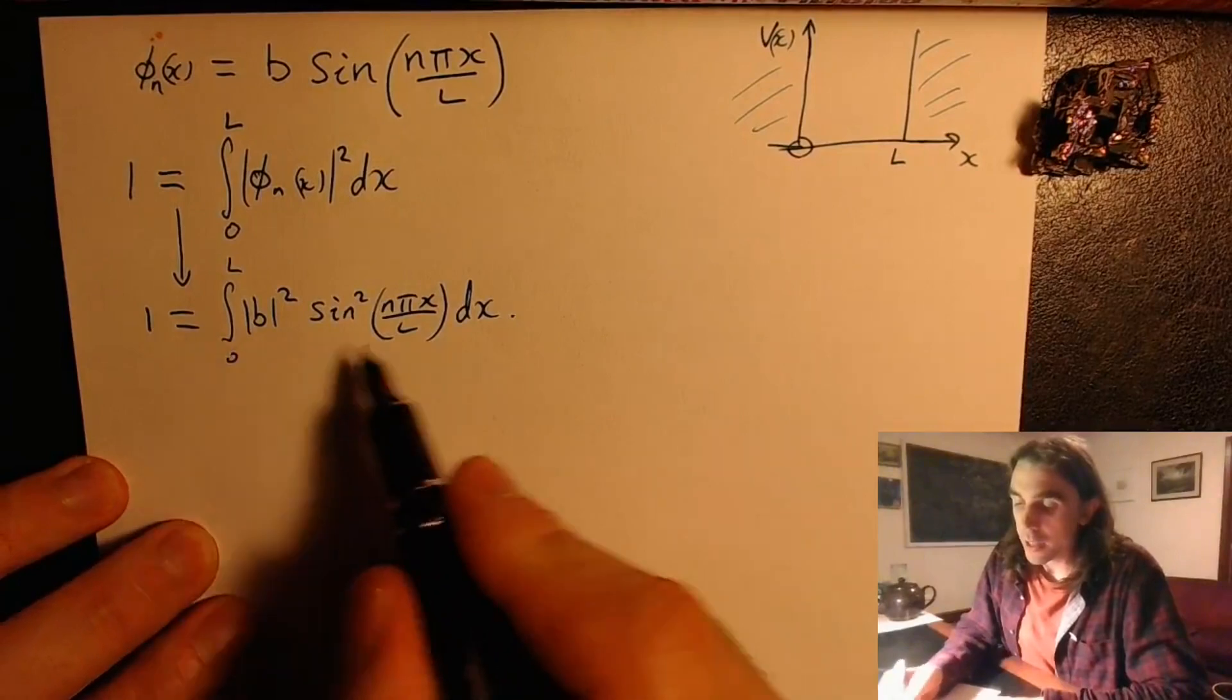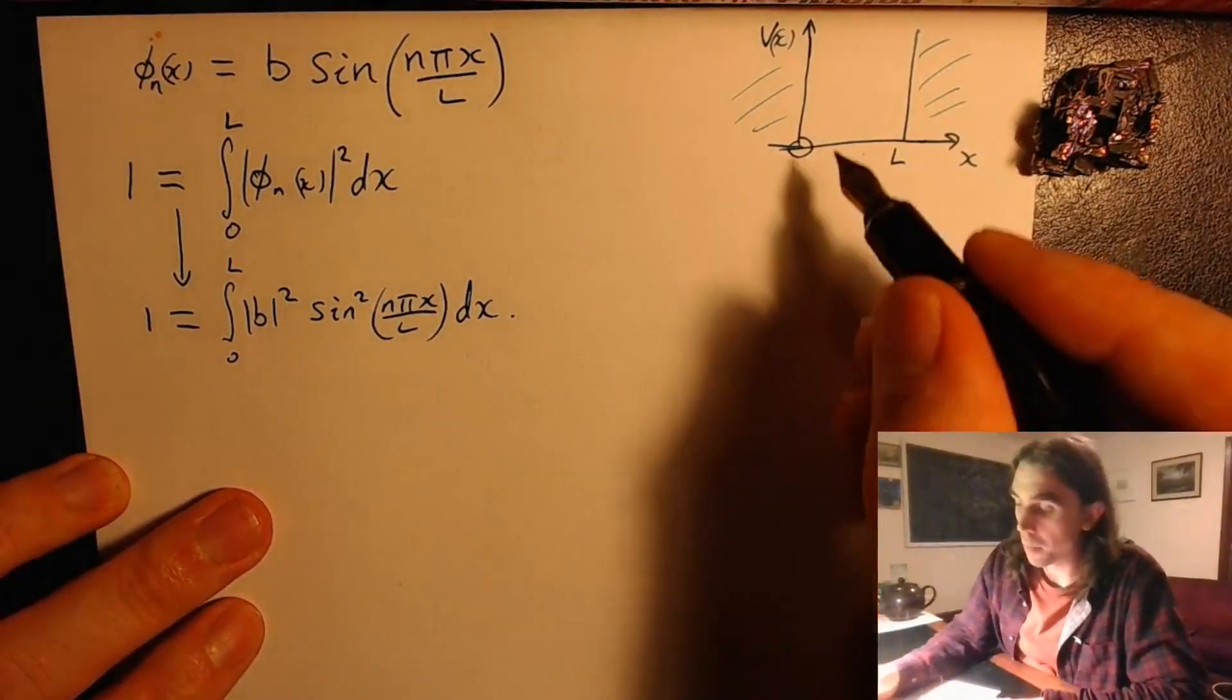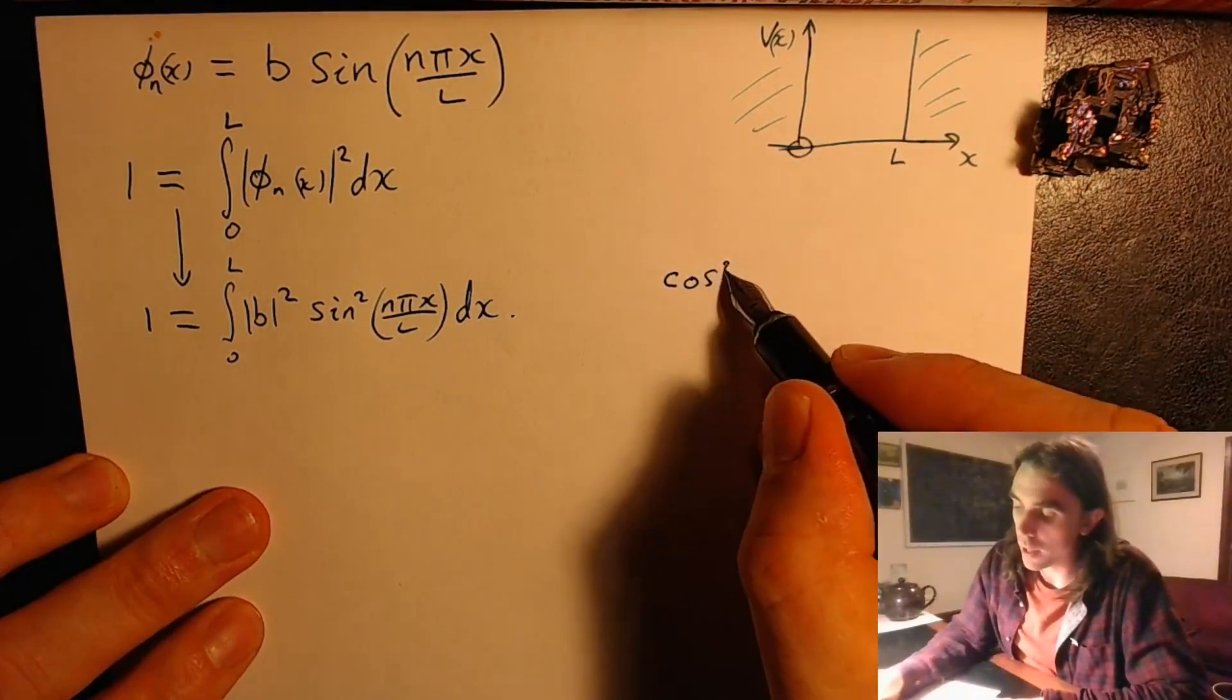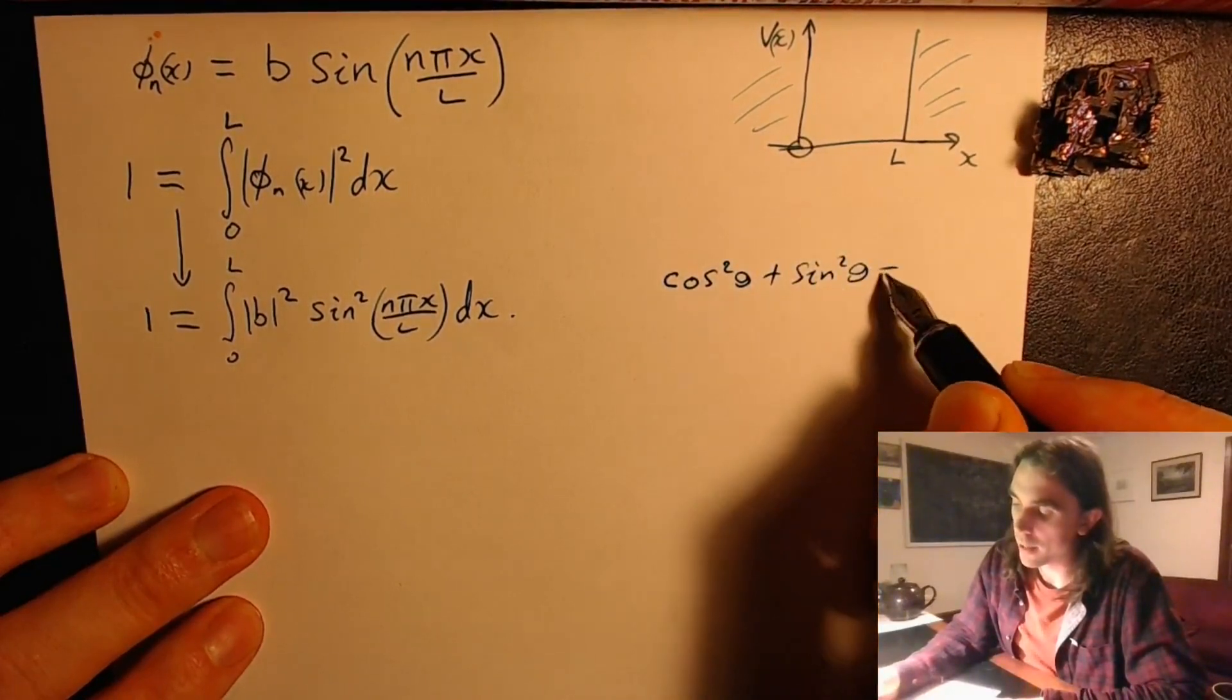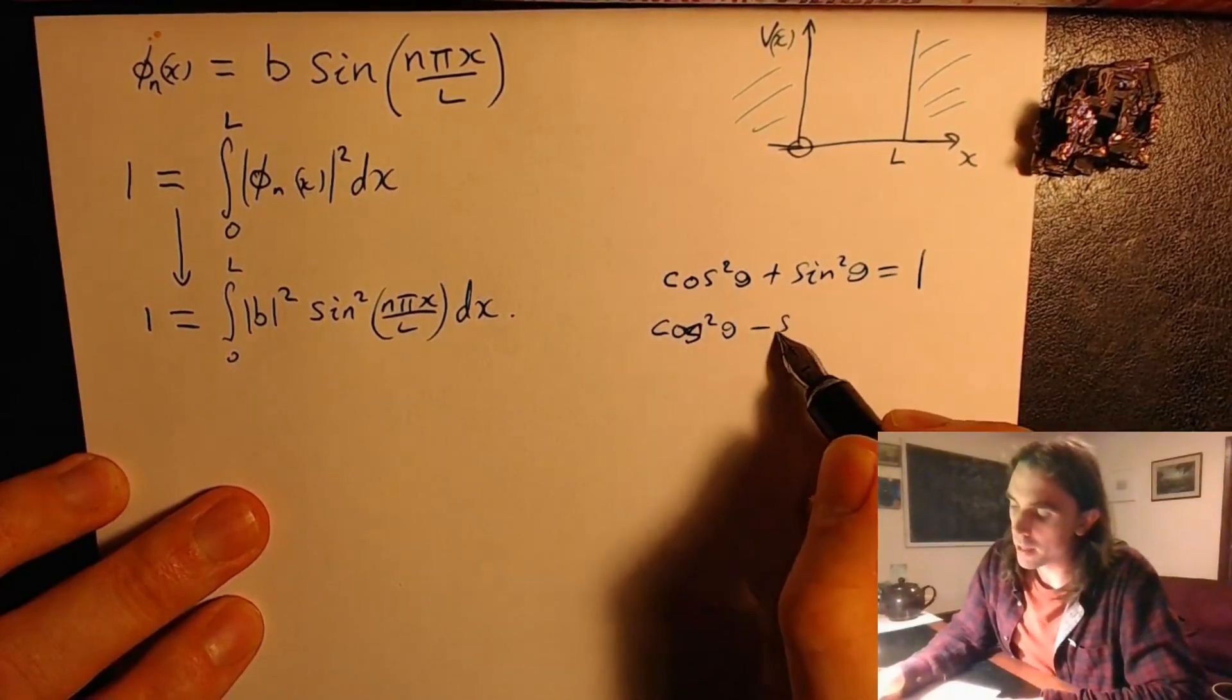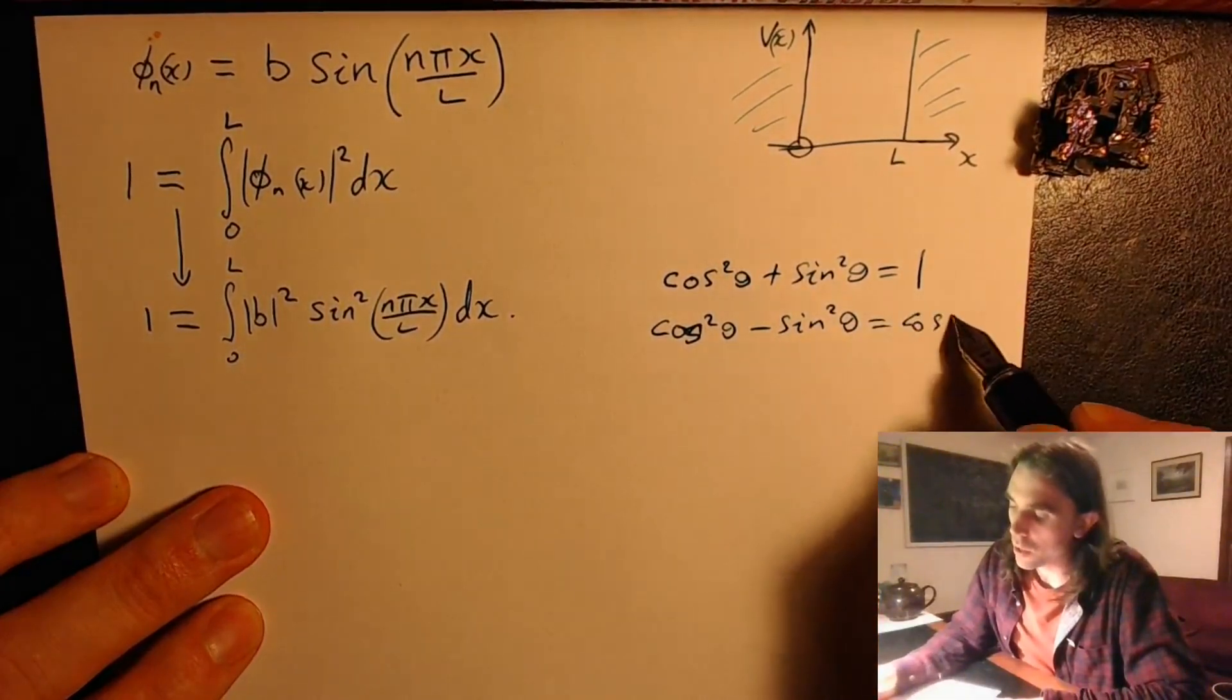Now to do this integral, integral of sin squared, and in general integrals for problems to do with the infinite well, we're going to use a couple of relations. So we can use cos squared theta plus sin squared theta equals 1, and the other one that tends to be useful is cos squared theta minus sin squared theta equals cos 2 theta.